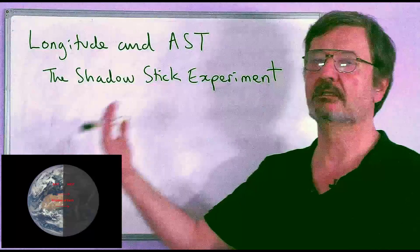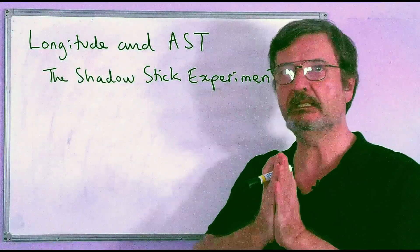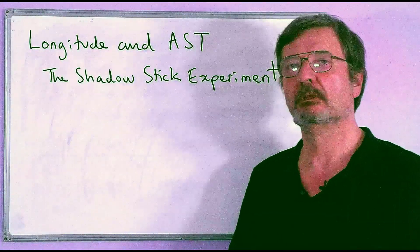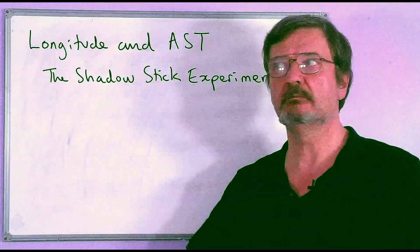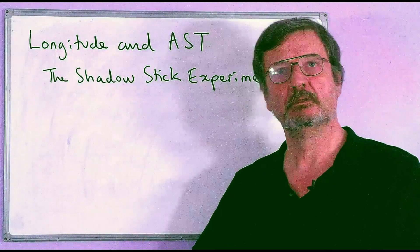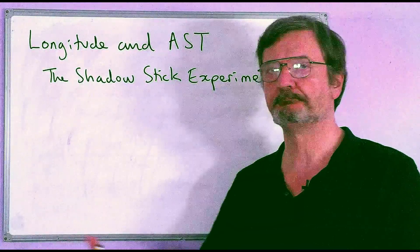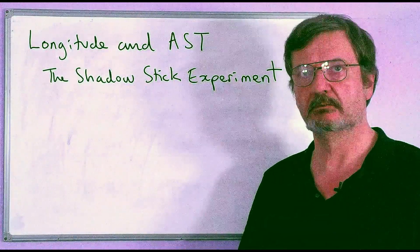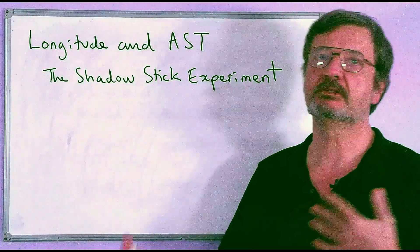If I am here and my apparent solar time is, say, midday, then if you are east of me your midday will have been five, ten, or fifteen minutes ago — so your apparent solar time will be later than mine. Whereas if you live west of me, then your apparent solar time will be earlier than mine.